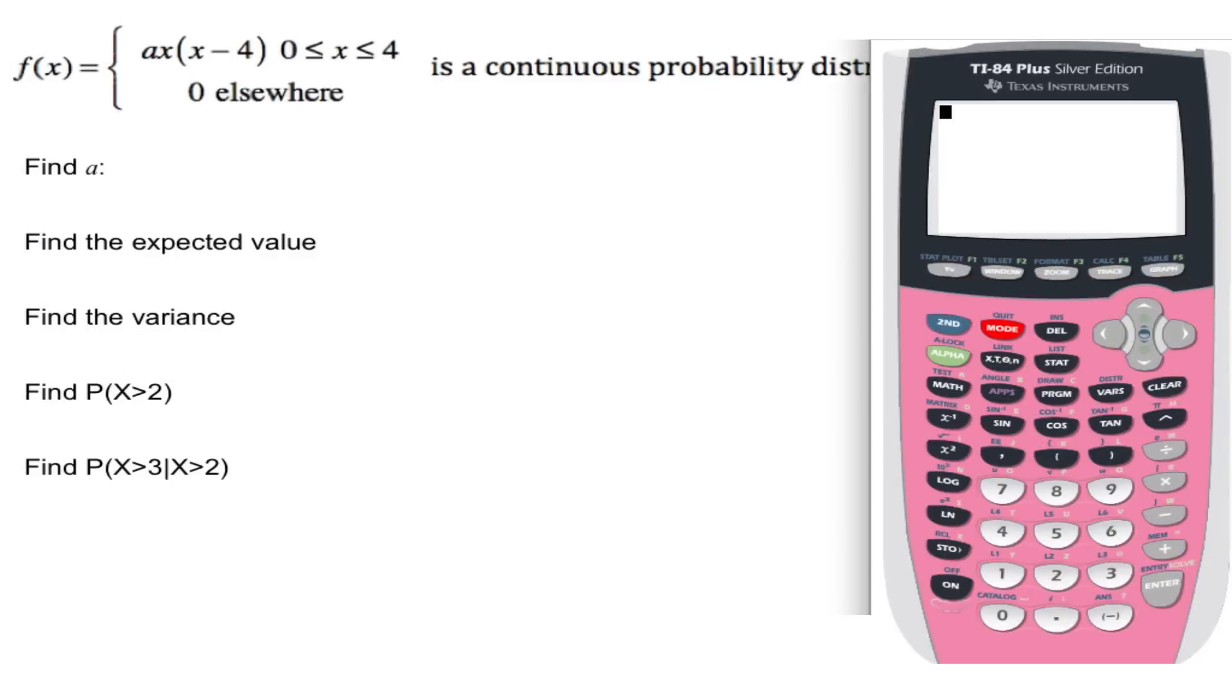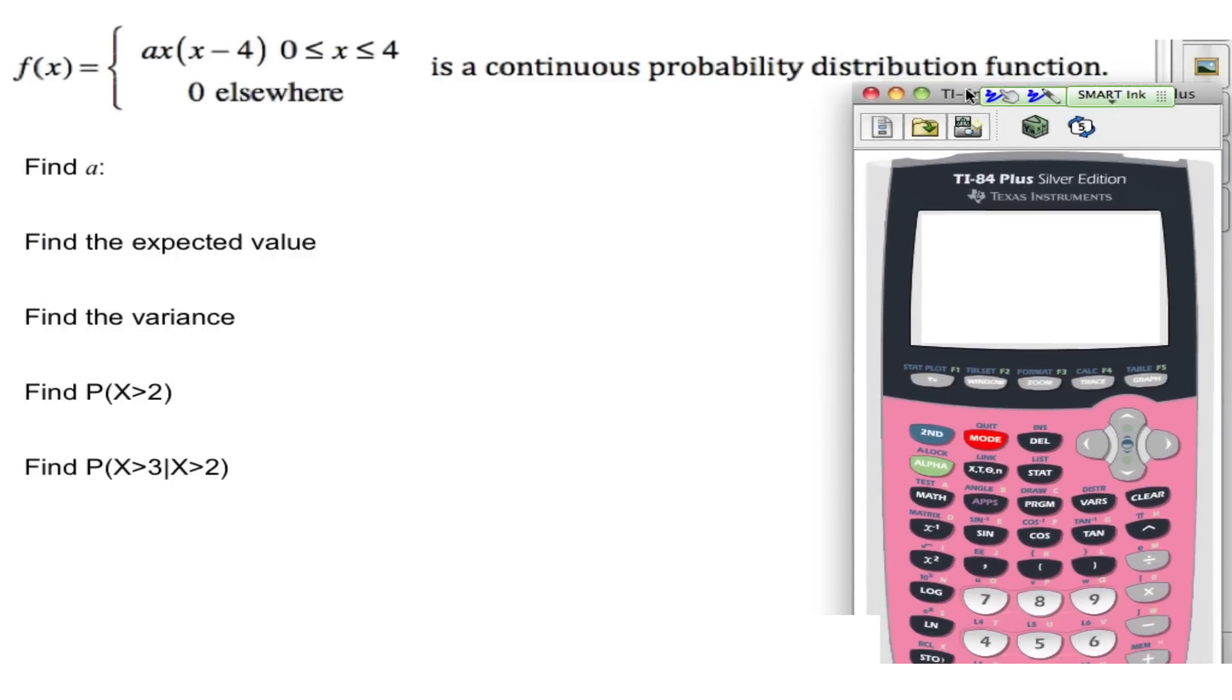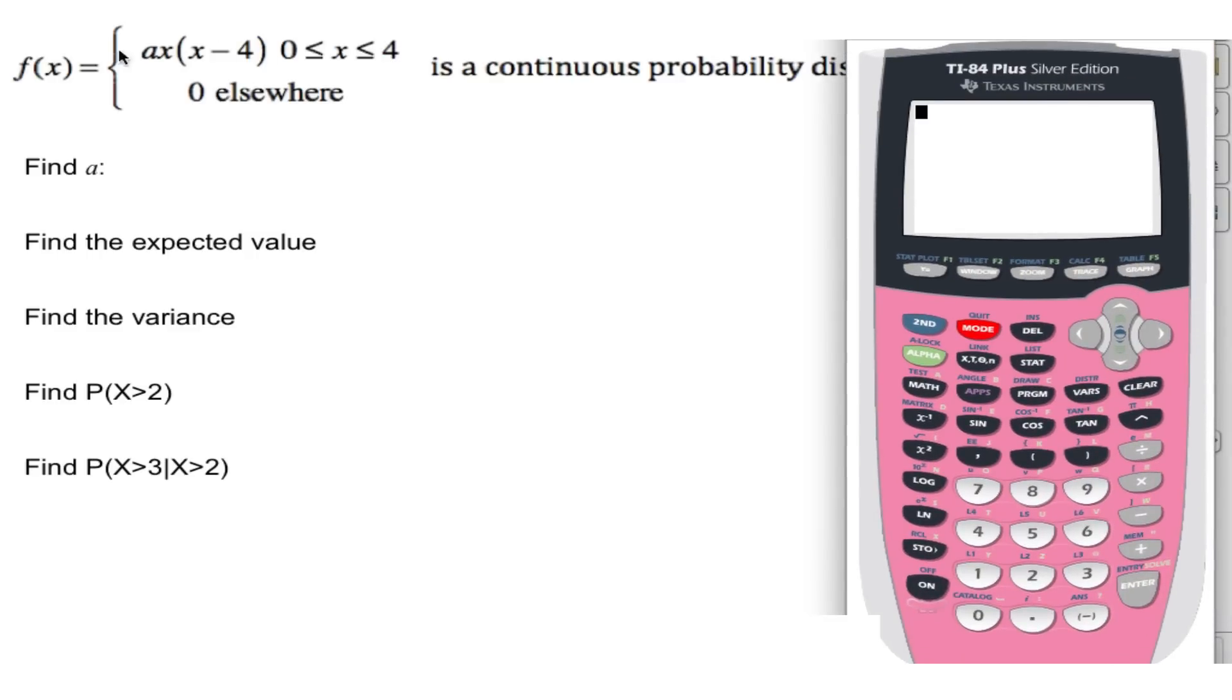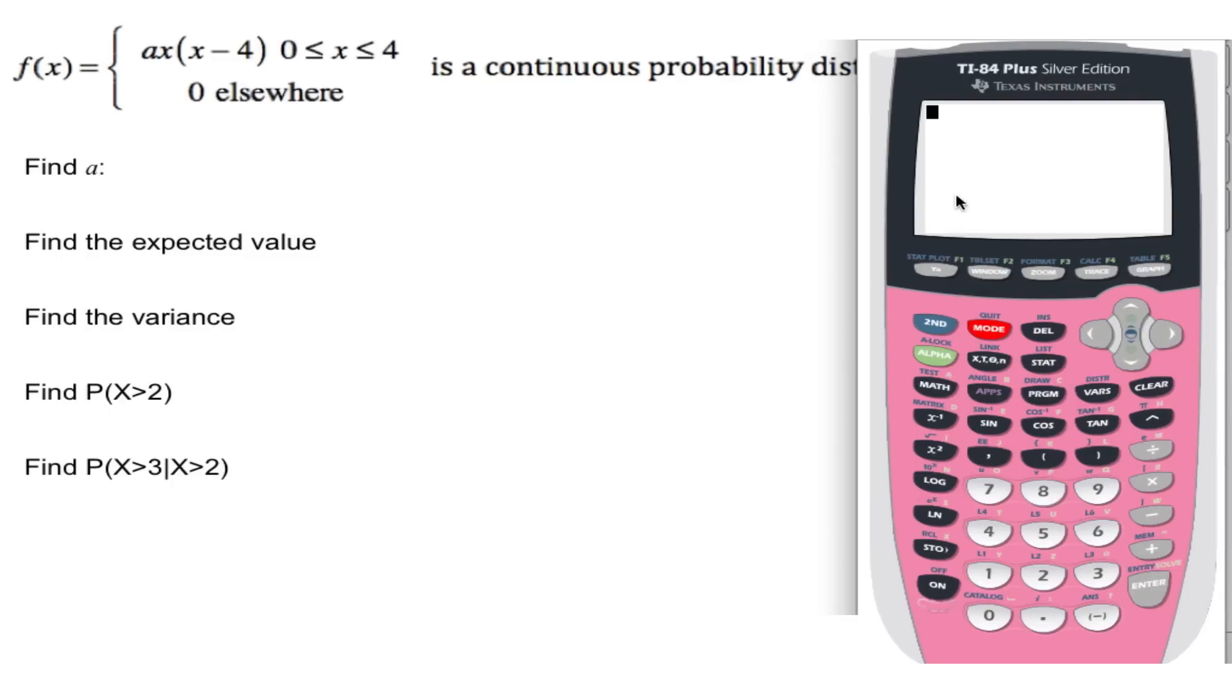Alright, so we've got a continuous probability density function here, and it says to find the value of a. We know that a must make the integral of this function, this little quadratic, the area needs to be 1. So let's go over to our y equals here, we're going to type in this function, x.